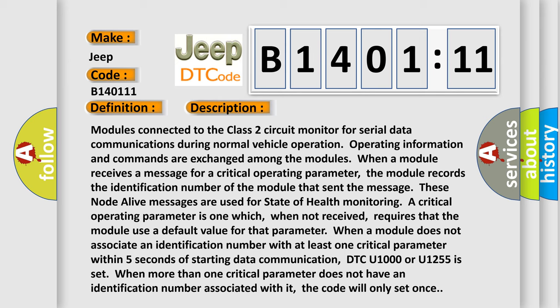Modules connected to the Class 2 circuit monitor for serial data communications during normal vehicle operation. Operating information and commands are exchanged among the modules. When a module receives a message for a critical operating parameter, the module records the identification number of the module that sent the message.